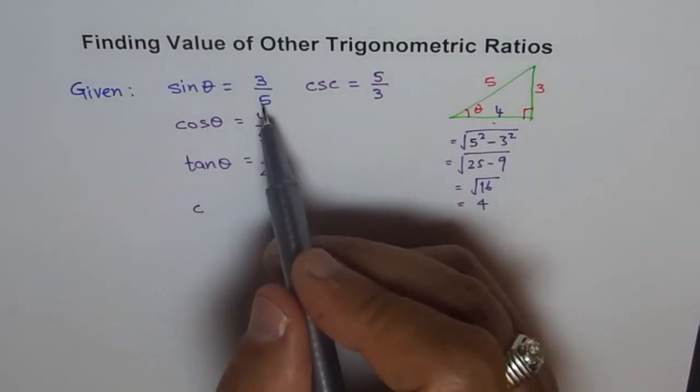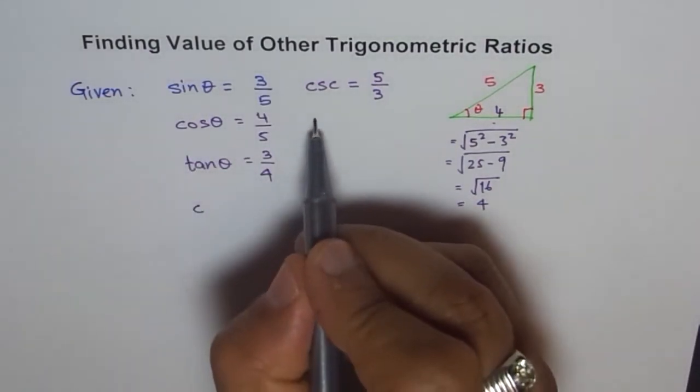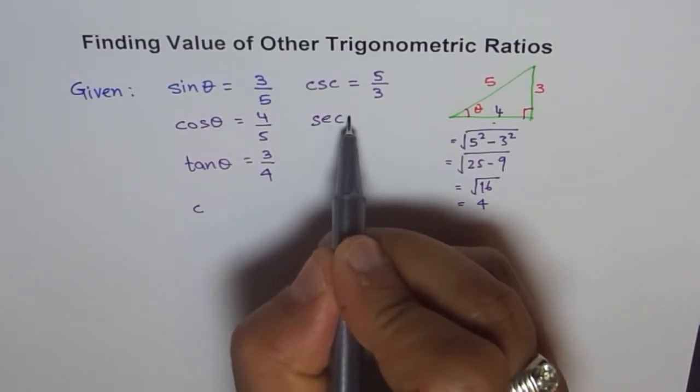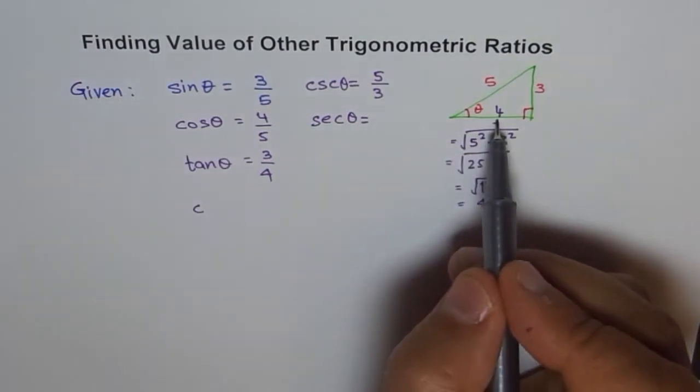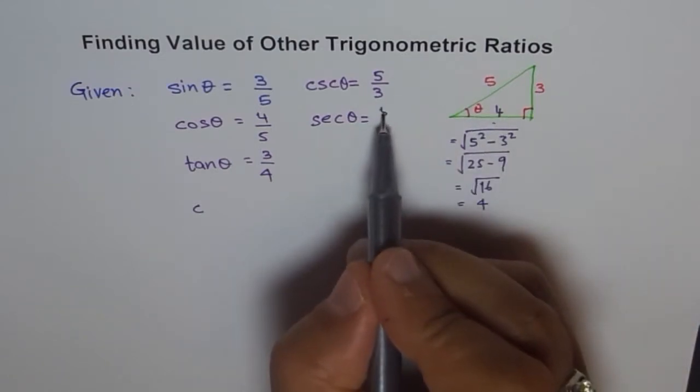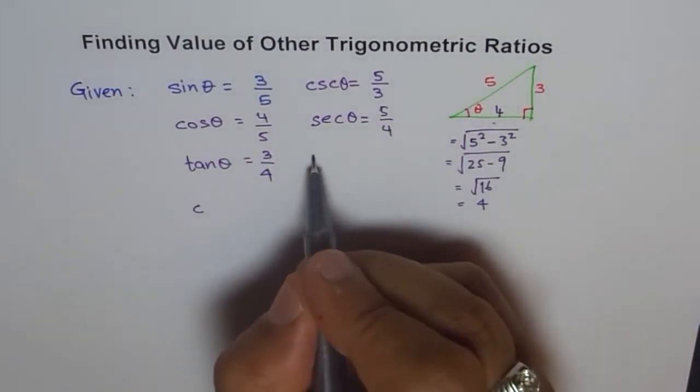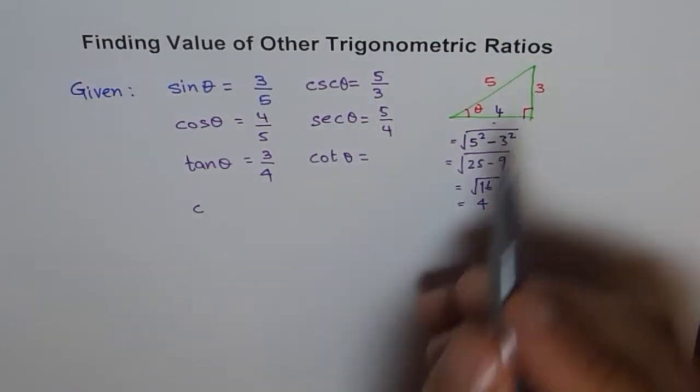Reciprocal of cos is secant, sec theta. We should write theta, never forget that. This is cos 4 over 5, so reverse is 5 over 4. So we get 5 over 4. And cotangent theta is 4 over 3, the reciprocal of tan.